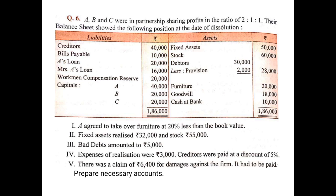Now coming to the asset side — fixed assets 50,000. This can be converted into cash, so it will be transferred to the debit side of the realization account: to fixed assets 50,000. Same with stock — to stock 60,000 on the debit side of the realization account.